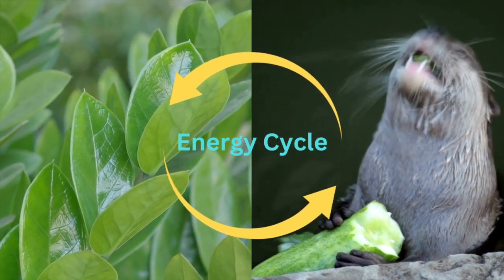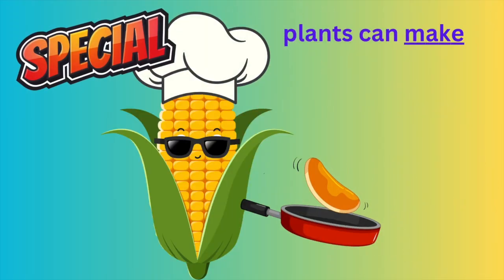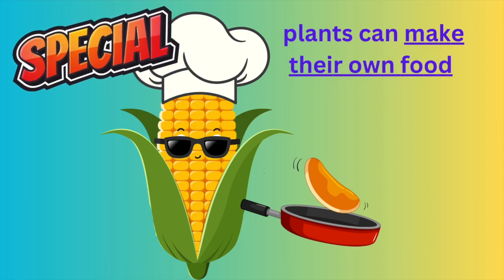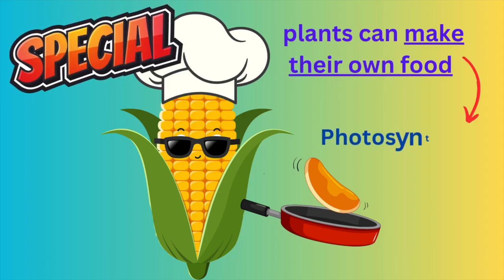Let's start with photosynthesis. Plants are super special because they can make their own food. They do this through a process called photosynthesis.